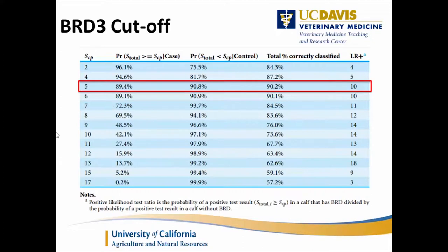To determine the cutoff, we used ROC curves. We refrained from estimating sensitivities or specificities at this stage because you can't really estimate the sensitivity of a scoring system based on another scoring system — using the McGurk system as reference would introduce bias. We used the receiver-operating characteristic curve to determine the point where most calves are correctly classified, which was at a score of 5, giving a likelihood ratio of 10. Any score below that has a much lower positive likelihood ratio.